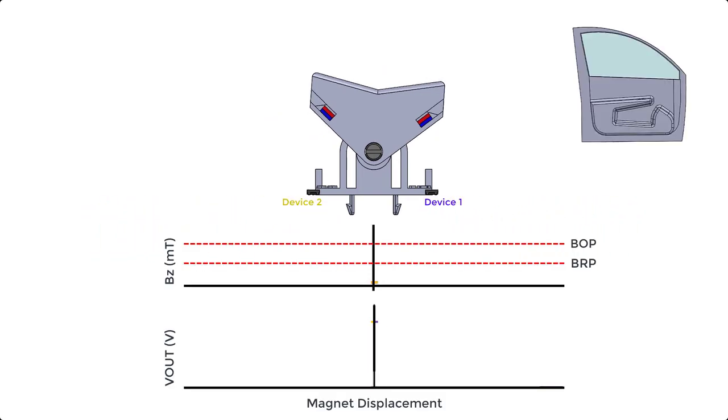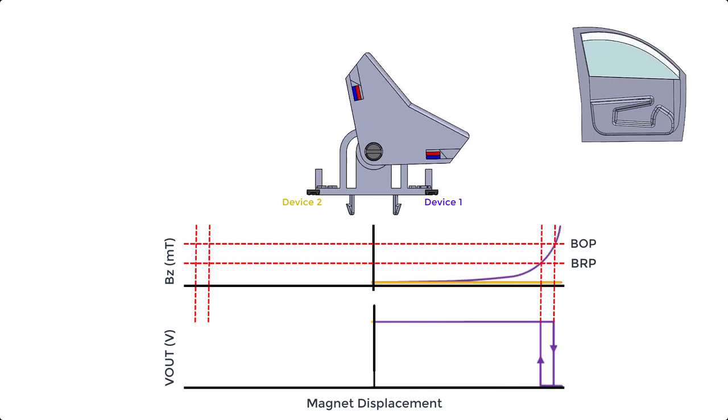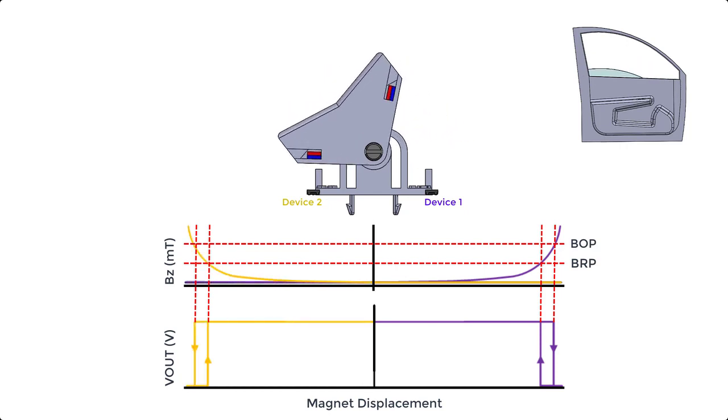When the user moves the rocker sufficiently down to the right, the right magnet triggers the BOP threshold, which moves the window down. Then, when the user pushes down sufficiently far to the left, the right BRP and the left BOP are triggered, moving the window back up.